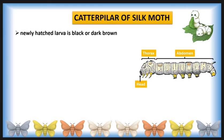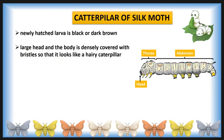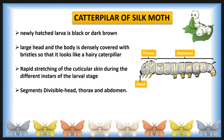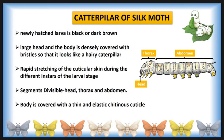The silk moth larva when newly hatched is black or dark brown in color. It has a large head and the body is densely covered with bristles, making it look like a hairy caterpillar. As the larva grows, it becomes smoother and lighter in color due to the rapid stretching of the cuticular skin during the different instars of the larval stages. The larval body consists of segments including head, thorax, and abdomen. The entire body is covered with a thin and elastic chitinous cuticle, capable of being extended considerably to permit rapid growth during an instar.